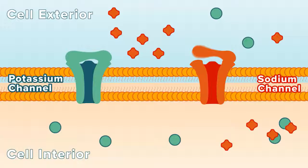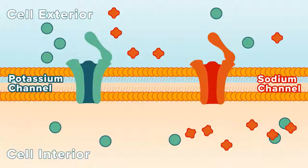Sodium and potassium ions diffuse through the membrane channels to the opposite sides of the membrane. They naturally move from areas where there is more of the same ion to areas where there is less.